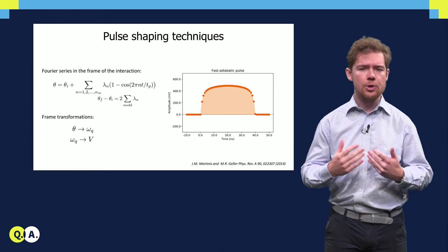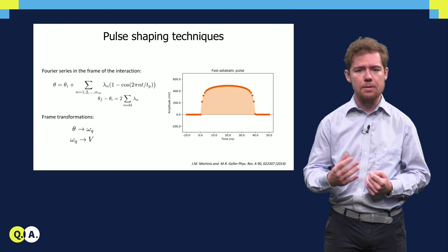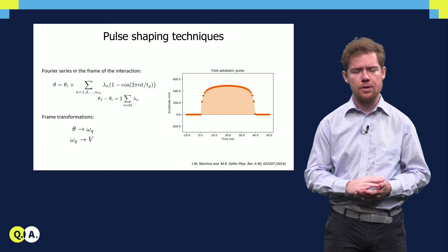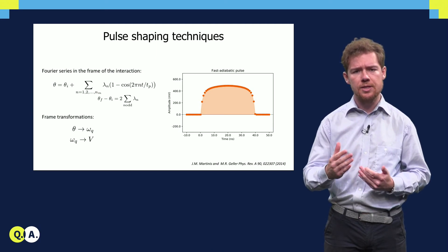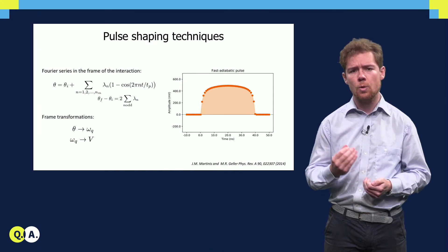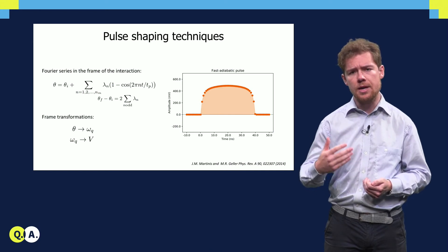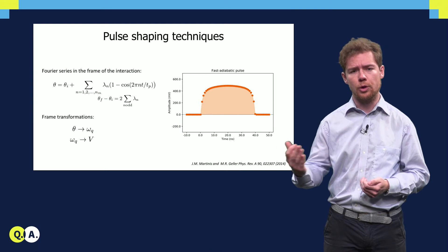This is typically done using a special pulse shape, known as a fast adiabatic pulse that minimizes the leakage. This pulse shape can be expressed as a Fourier series in the frame of the interaction, which, with knowledge of the system parameters, can be converted first into a frequency and then into a voltage to be applied to the flux bias line.